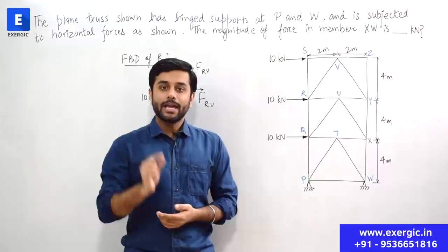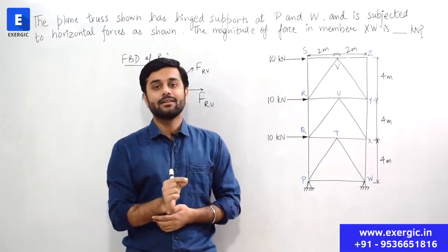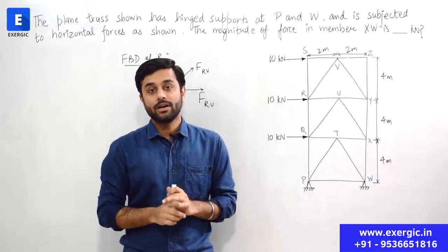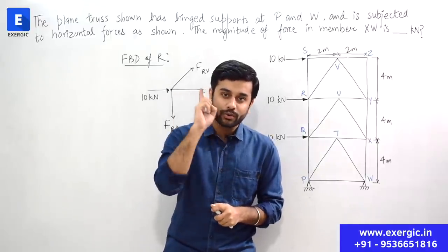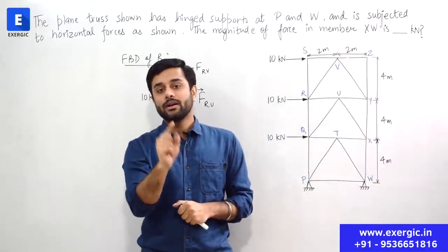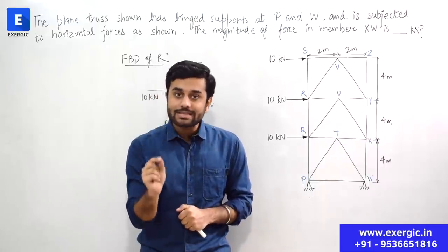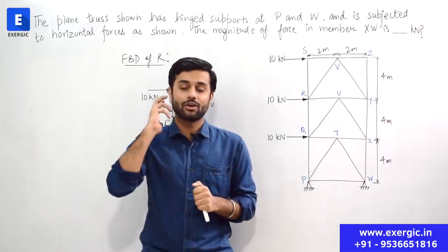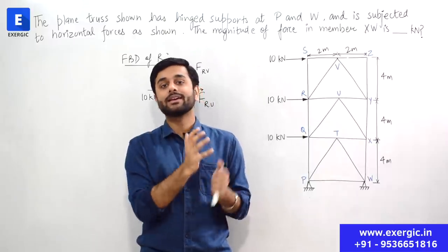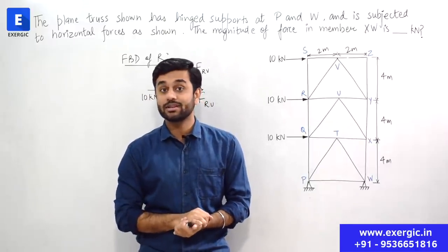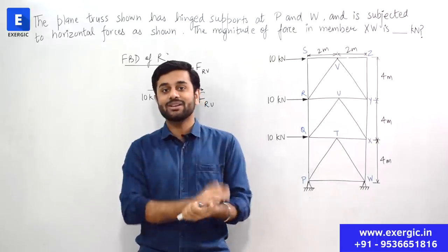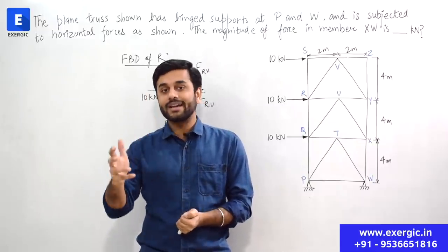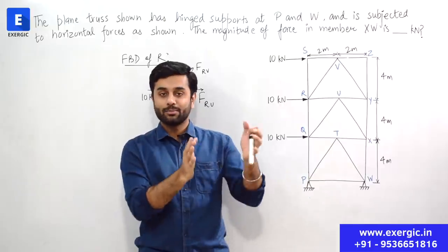If you can reach the answer in two or three joints, you can follow method of joints. But if you want to reach the answer in one step, method of section is the way. Obviously it requires practice — what section to select is totally up to you, and that is where your conceptual and innovative thinking comes into action. There is no fixed way to do it, and that is where you can test yourself as an engineer.